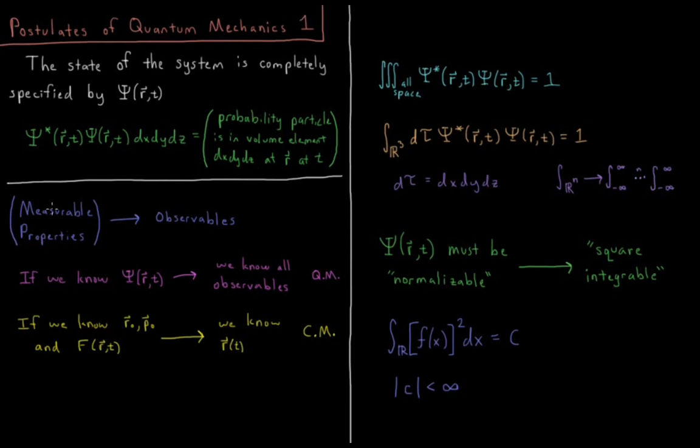So measurable properties in classical mechanics, things like energy, momentum, position, angular momentum, kinetic energy, potential energy, those are all what we refer to as observables. Those are things you can measure and observe the value of.